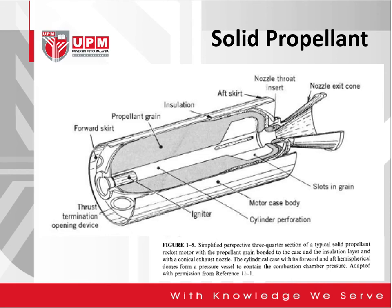The most common type of rocket propellant is the solid propellant. This is a simplified perspective of a three-quarter section of a typical solid propellant rocket motor with the propellant grain bonded to the case. This is the propellant grain mounted in the case, with an insulation layer and a conical exhaust cone nozzle.